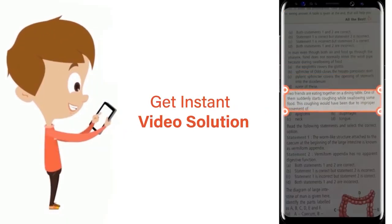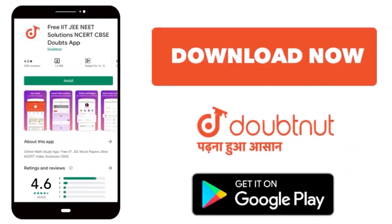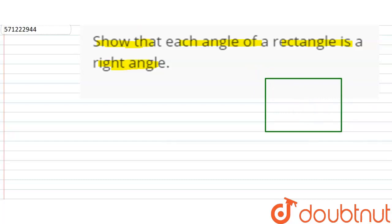Hello friends. The question is we have to show that each angle of a rectangle is a right angle. Suppose this is our rectangle.